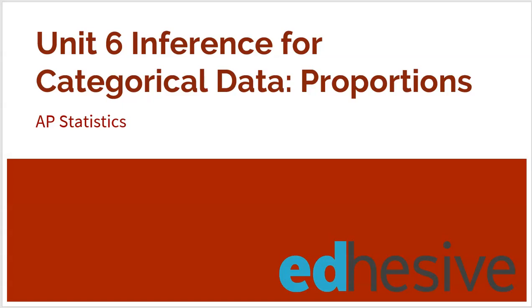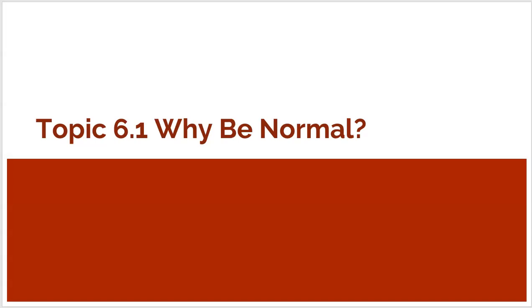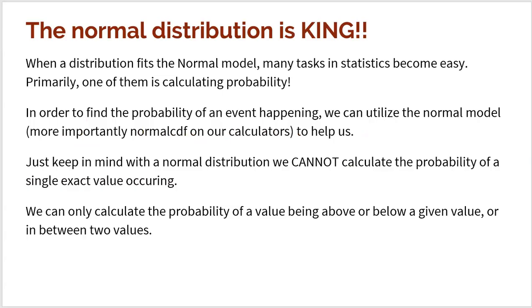This first topic is 6.1, 'Why Be Normal?' It's kind of an intro topic that will walk through what is really important and what we're going to be learning about in this unit. The normal distribution really is king — it is vital to everything we do pretty much the rest of the year, not just Unit 6, but Unit 7 and even further on from that.